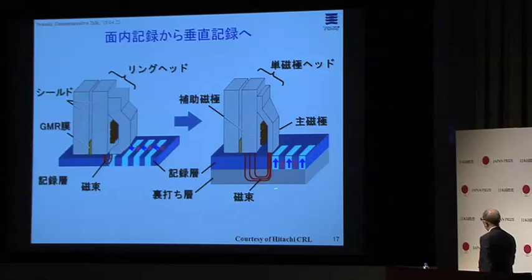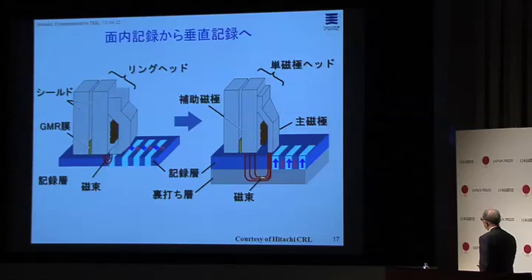In conventional horizontal recording, a ring head was used and residual magnetization was horizontal. The approach was to combine the newly emerging GMR (giant magnetoresistance) read head with perpendicular recording — keeping the read head unchanged but converting the recording side to perpendicular. The soft magnetic underlayer, originally conceived on the back side, was moved to the front surface for practical reasons, with the underlayer flux passing horizontally — thus preserving perpendicular magnetization in the recording layer.